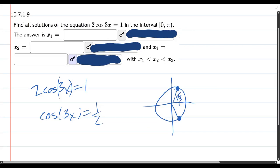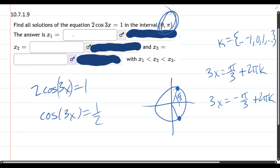So we have 3x equals pi over 3. We also have 3x equals negative pi over 3. And of course, we can add 2 pi k. This is for integer k values. We're going to use negative 1, 0, and 1. We can go both directions, but once we go past that, x will be outside of that interval.